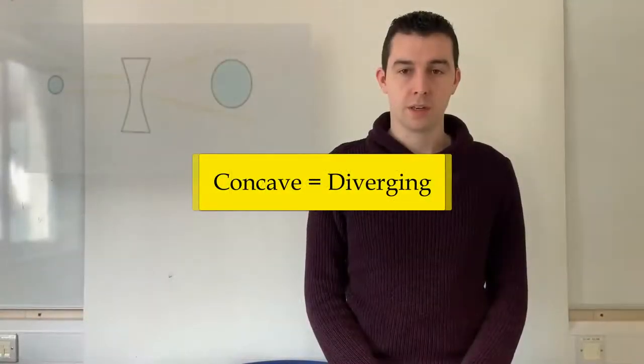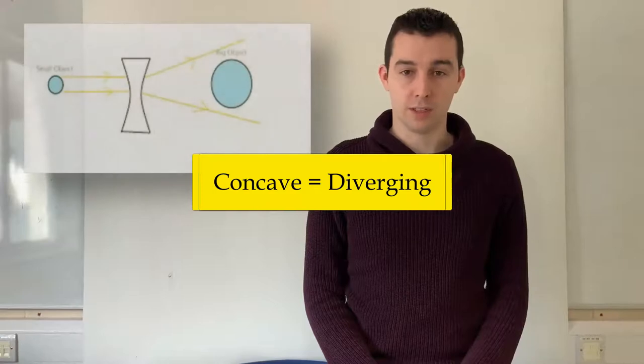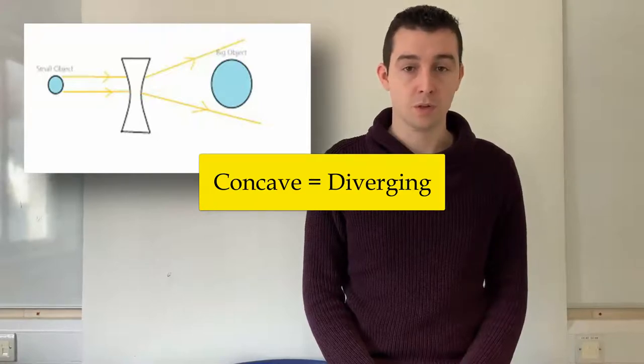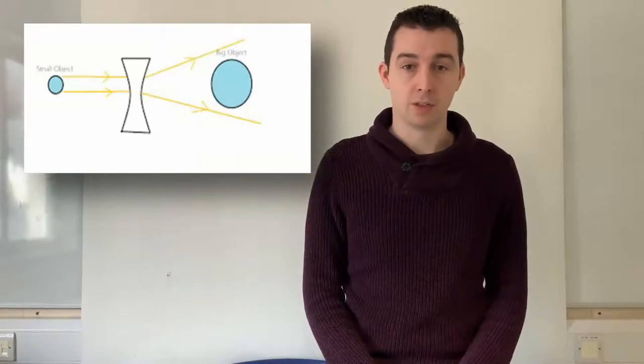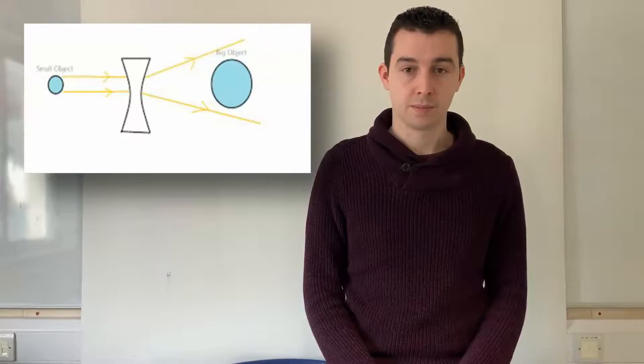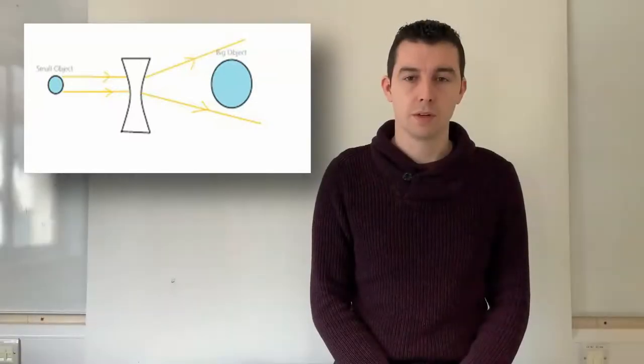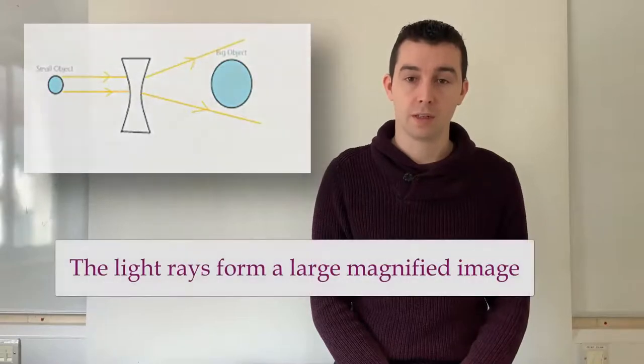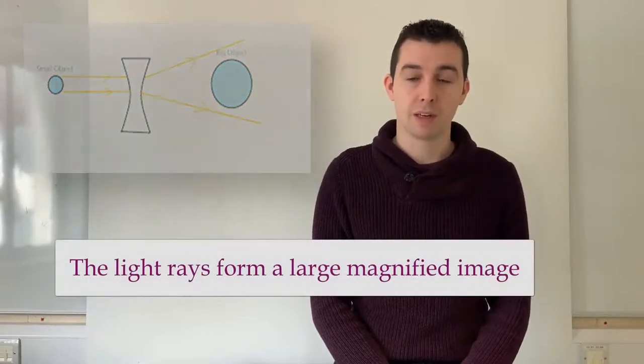Concave lenses are also called diverging lenses. Concave lenses cause rays of light to diverge, which means to spread apart, as they pass through the lens. Light rays passing from an object through a concave lens form a large, magnified image.